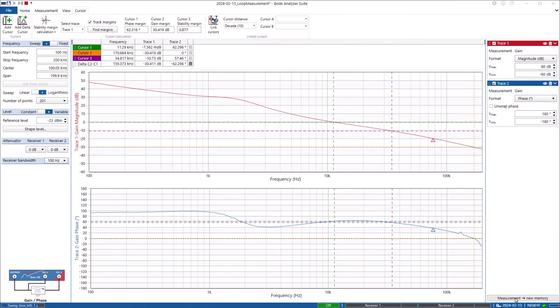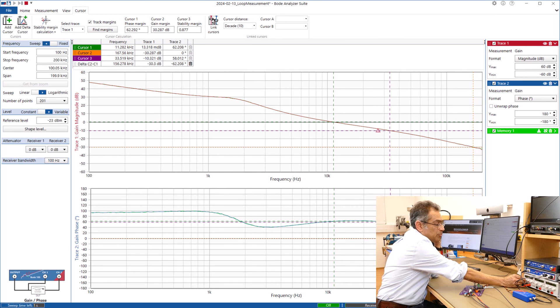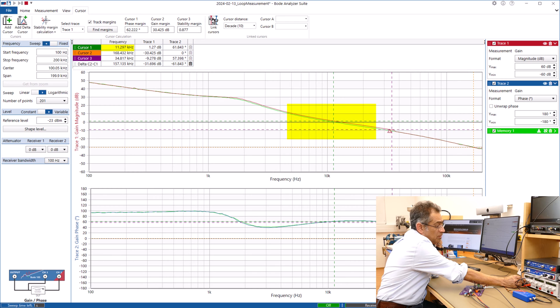So I'm just going to save this to memory and I'm going to increase my input voltage and just have a look at what happens to the crossover frequency as I increase my input voltage.